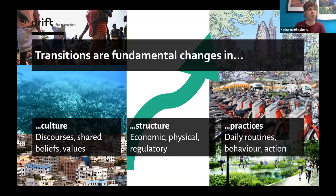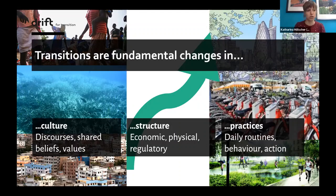Cultures include how we think about and value things — for example, do we want to continue eating processed food farmed far away in greenhouses and transported all over the world? Structures mean changing our policies and regulations — for example, to give everyone a carbon budget and to ensure that companies cannot make profit from exploiting nature and people. Structures also include physical infrastructures that need to become long-lasting and sustainable. Finally, practices refer to our daily lifestyles and routines — for example, whether we take the bike, public transport, or the car to move around.